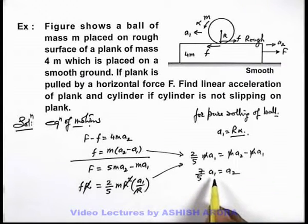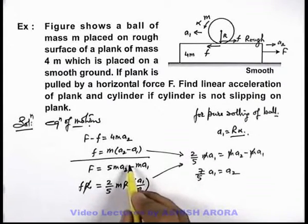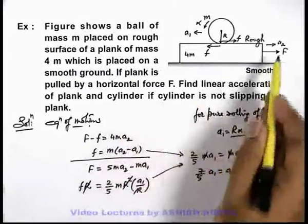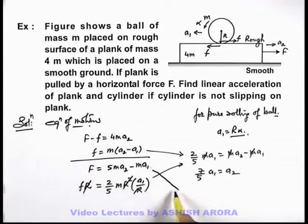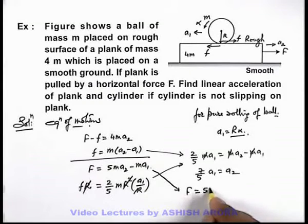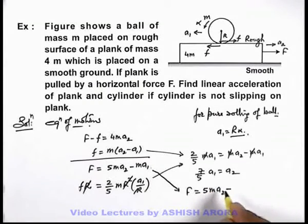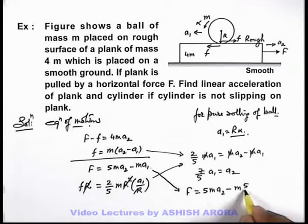So now in this situation, if we substitute the value of a₂ over here or a₁ over here, as we're required to find the linear acceleration of plank, so a₂ we've to find, we substitute value of a₁ here. And from here we get F equals 5ma₂ minus ma₁. a₁ we write 5/7 a₂.